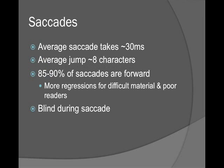Saccades are the little jumps — very fast, less than 30 milliseconds. The average jump is about eight characters forward, and 85 to 90% of saccades are actually forward. Regressions are when you go back in a text. In difficult passages or things with lots of ambiguity, you go backwards more. Poor readers jump backwards more because they have to reprocess. Saccades can predict comprehension: the more you move forward at a faster pace, the more comprehension you see. The less you fixate, the more comprehension you see, unless you're scanning — in scanning, you see less comprehension.